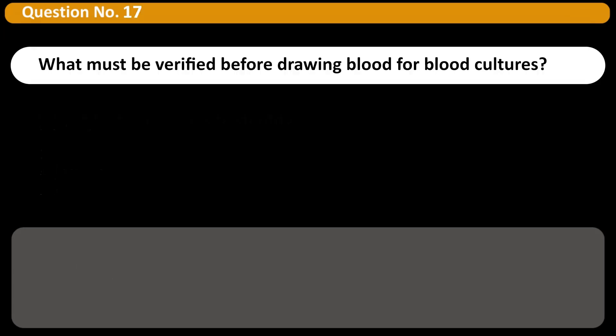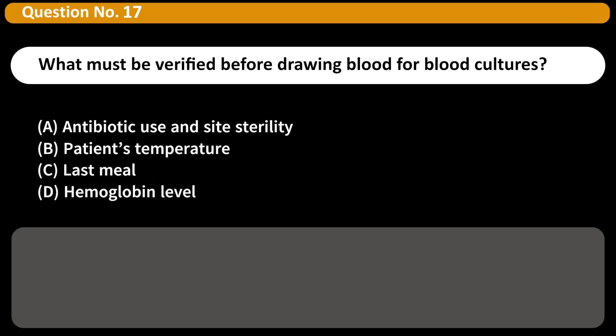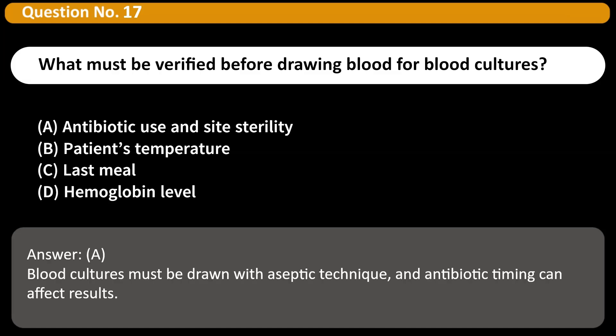What must be verified before drawing blood for blood cultures? A. Antibiotic use and site sterility. B. Patient's temperature. C. Last meal. D. Hemoglobin level. Answer: A. Blood cultures must be drawn with aseptic technique and antibiotic timing can affect results.